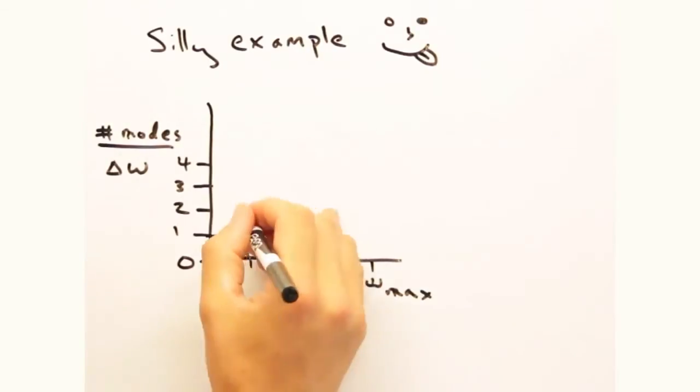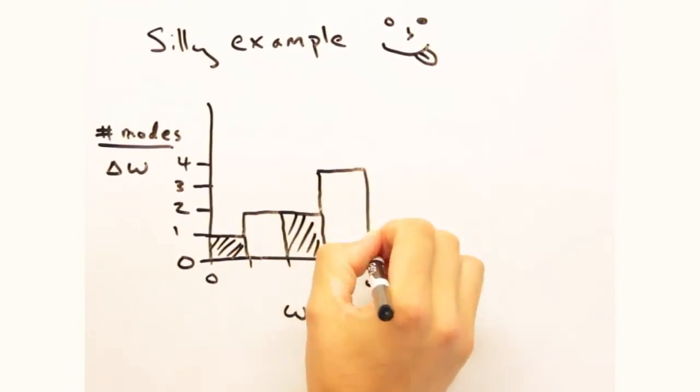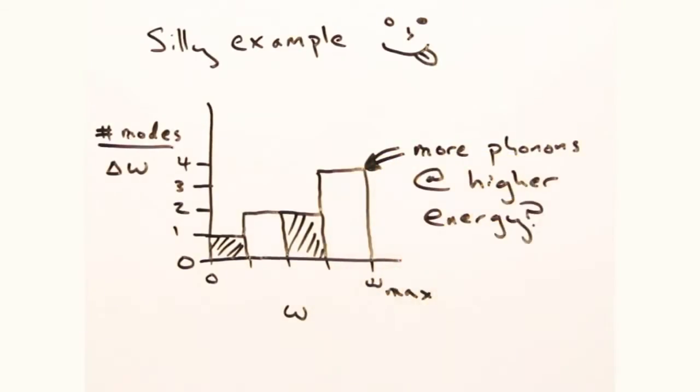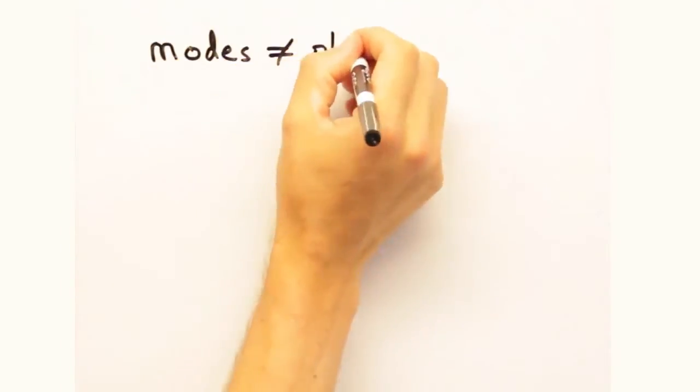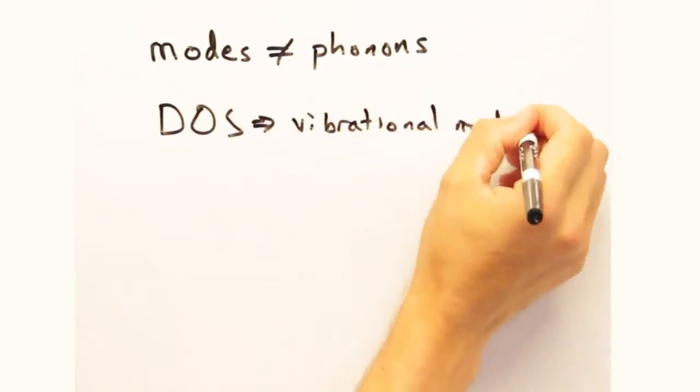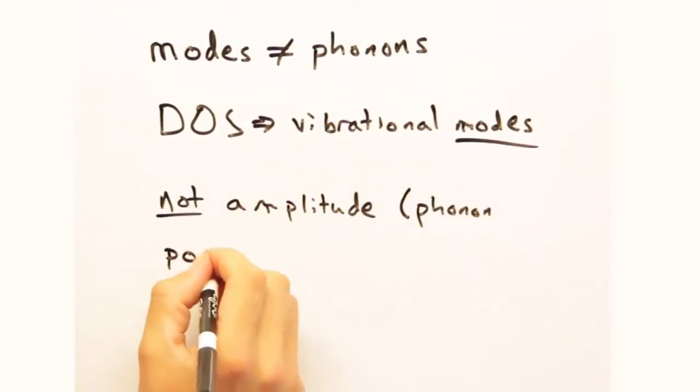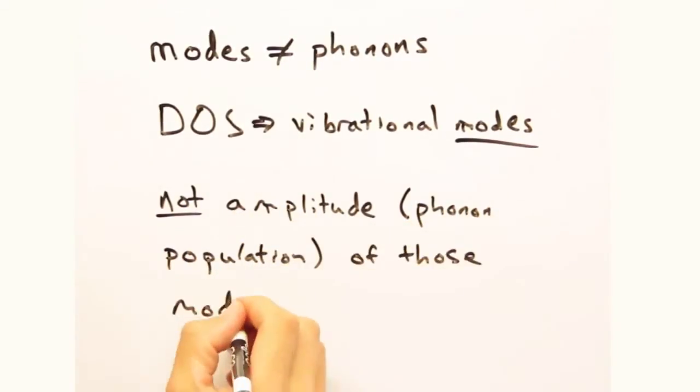True. But let's be more explicit. Let's plot the number of states versus omega. So there are more phonons at higher energies since the density is higher. Careful here. We never said anything about the population of phonons. The density of states describes how many modes are at a particular energy level. It's completely independent of how many phonons exist in these particular modes.